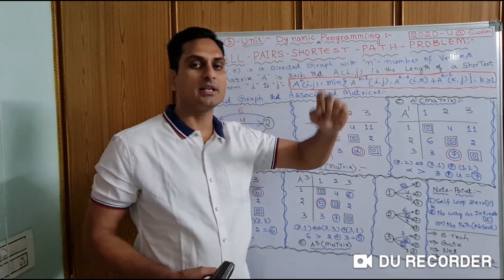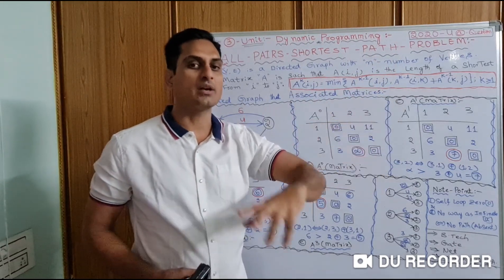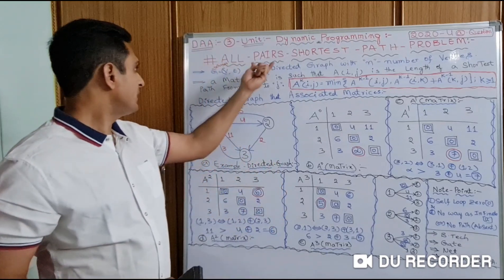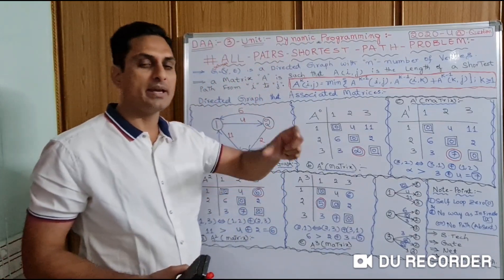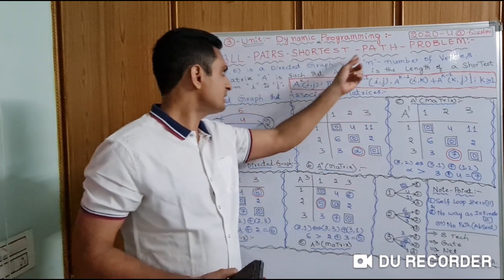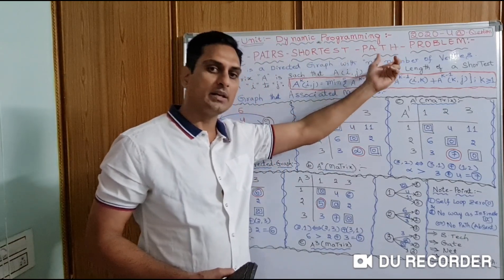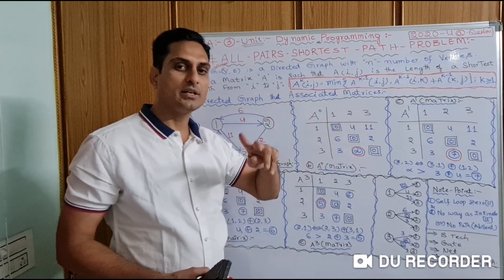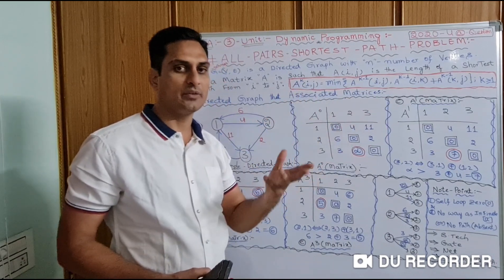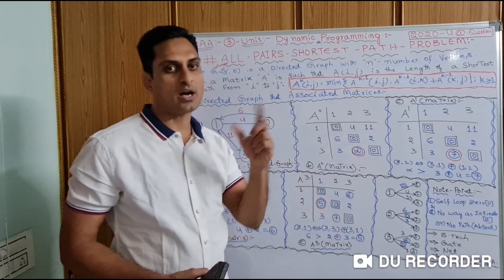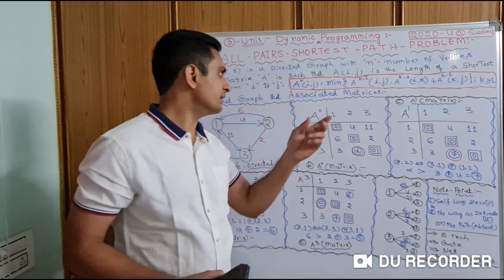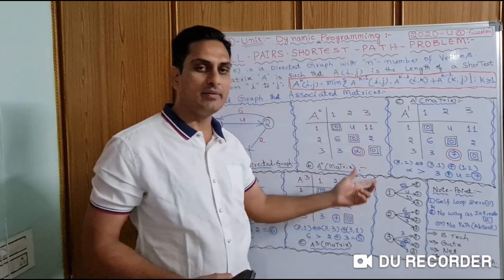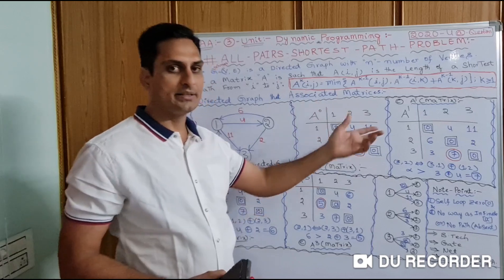Dynamic Programming tells us about a sequence of decisions. To reach a point, we take decisions to pass to the next point. By the name itself, All Pairs means we take all pairs and find the shortest path — path, distance, or cost. Cost and distance are directly proportional: if you increase the path, the cost also increases. In algorithm we say cost; in theory we say distance or length.